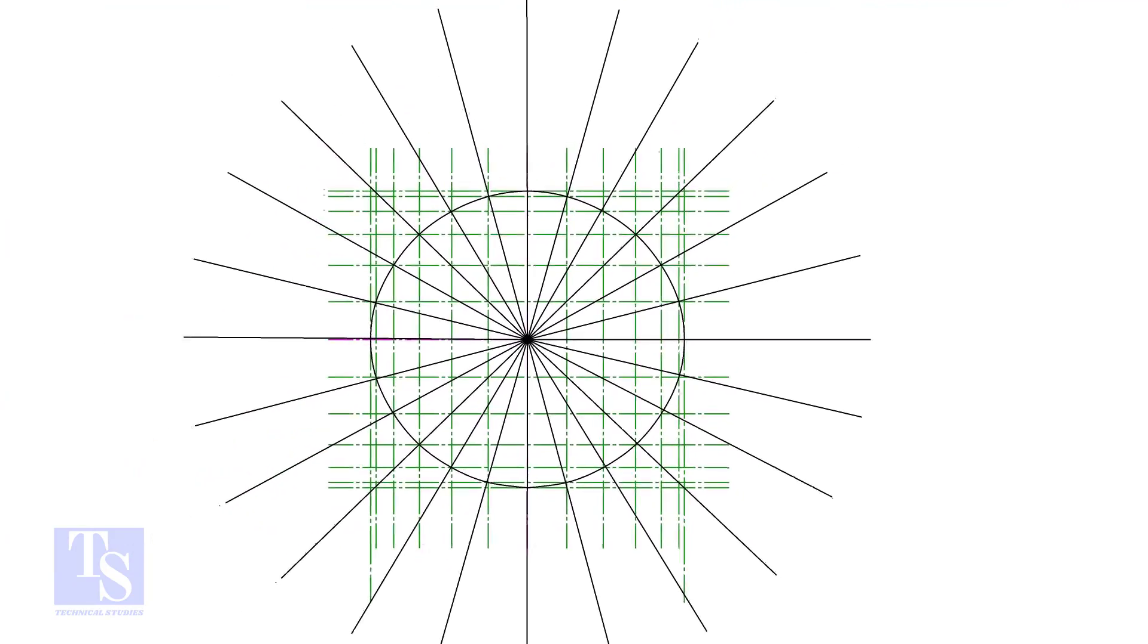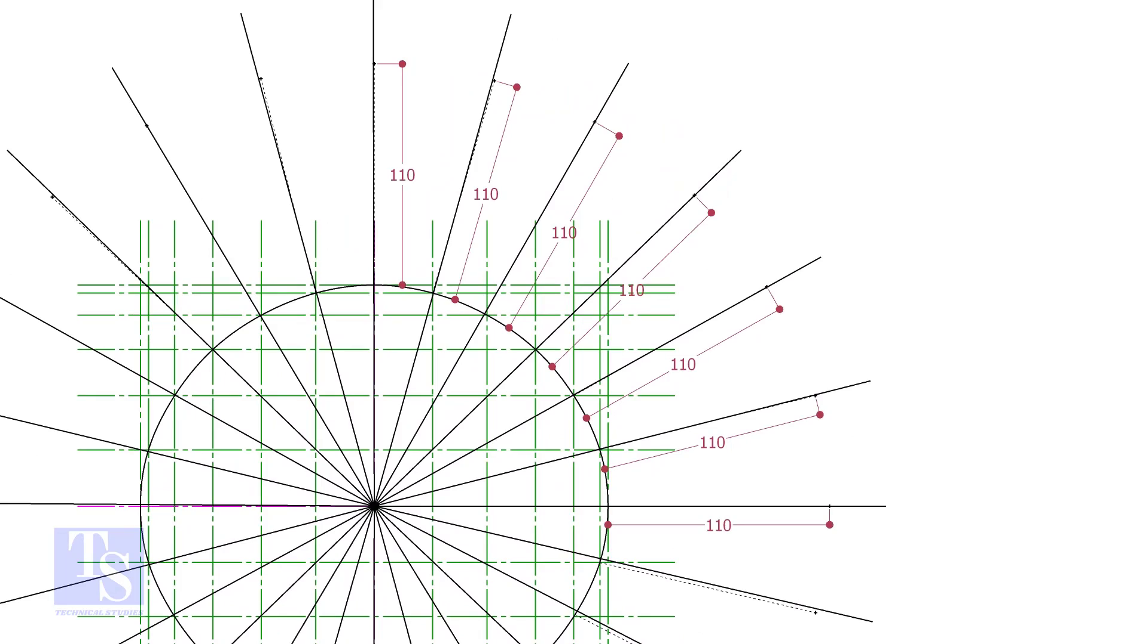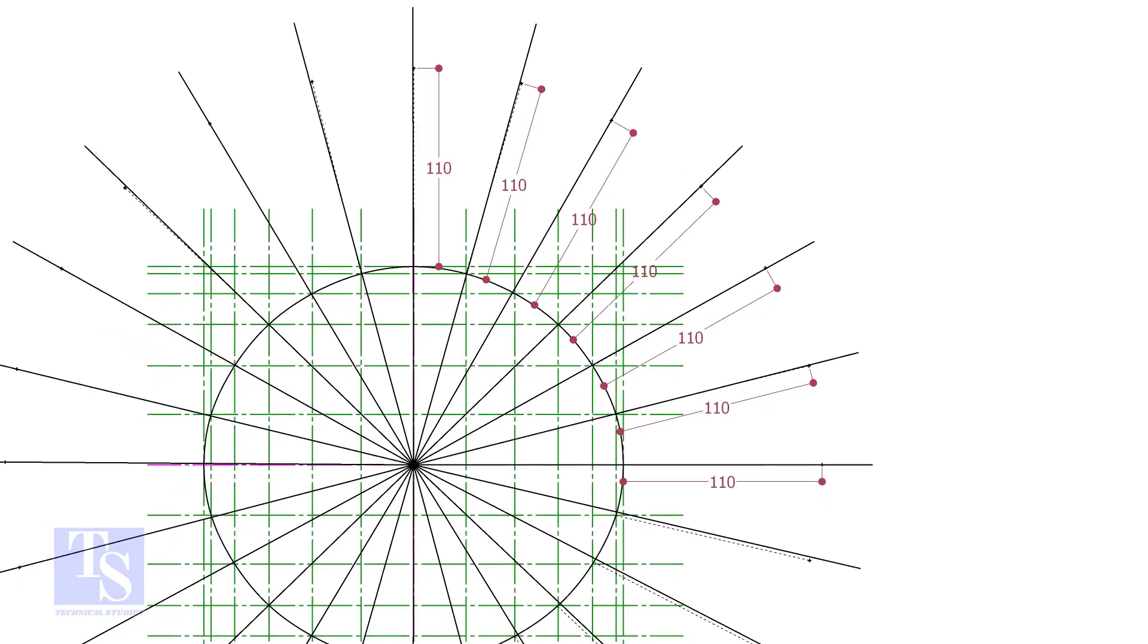Let us mark the width of the RF pad. To get a uniform width, draw tangential lines as shown. Mark 110 mm, which is half the diameter of the branch pipe, all around the opening, as shown.